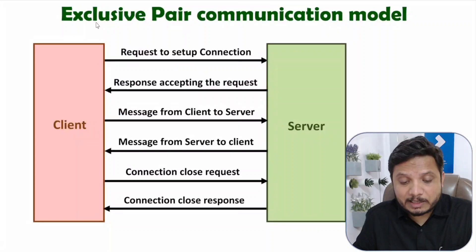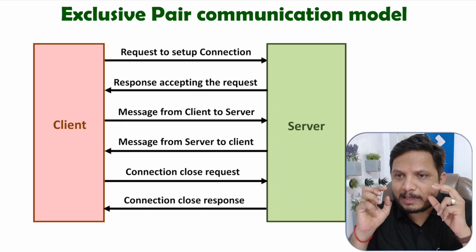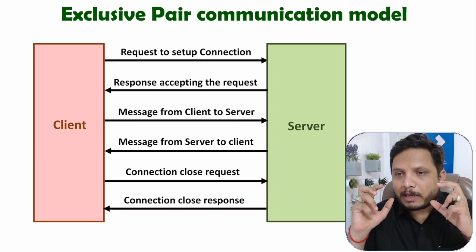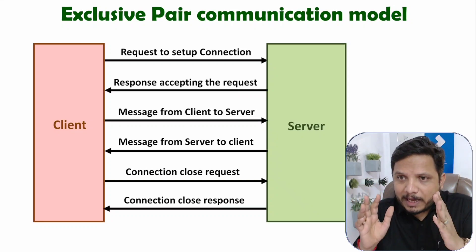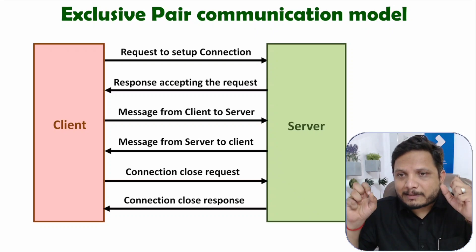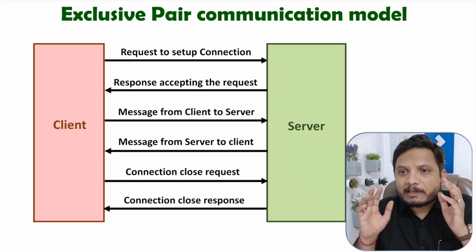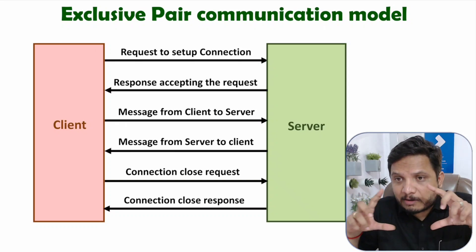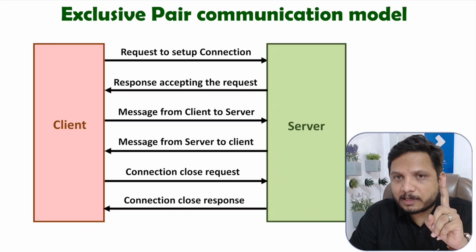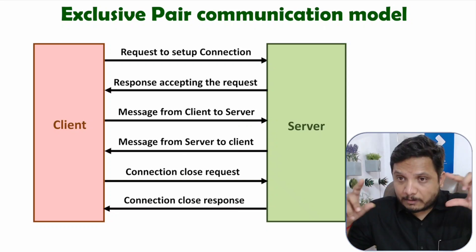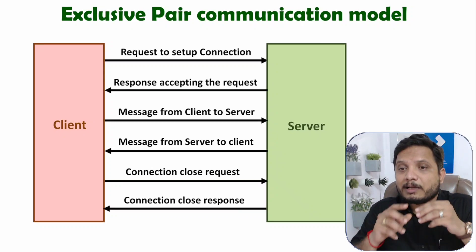The last communication model is the exclusive pair communication model. In this model, between client and server we first establish a connection. Once the connection is established, client and server can transfer data in full duplex mode — meaning both can transmit and receive data simultaneously. After completion of data transfer, the connection is terminated. So there are three stages: setup connection, data transfer, and terminate connection.